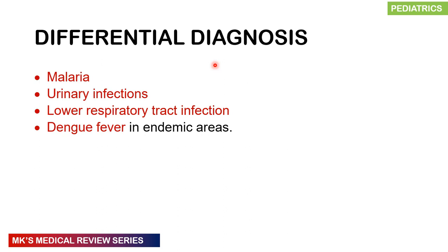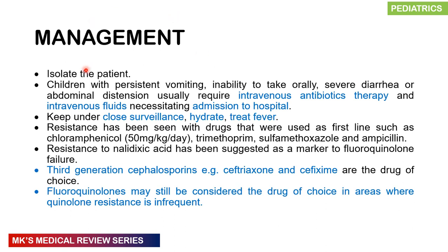Differential diagnoses include malaria, urinary tract infection, lower respiratory tract infection, and dengue fever in endemic areas. For management, we generally isolate the patient. If the child has persistent vomiting, inability to take oral fluids, severe diarrhea, or abdominal distention, they are a candidate for intravenous antibiotic therapy, intravenous fluids, and hospital admission. We want to keep close surveillance, hydrate them, and treat the fever. Resistance has been seen with the first-line drugs.